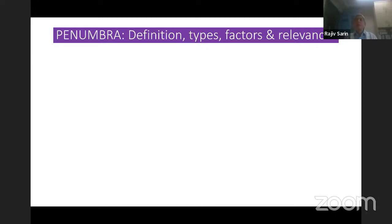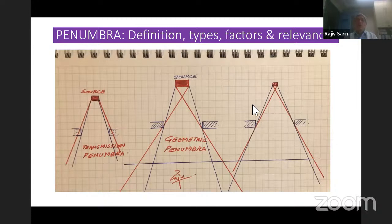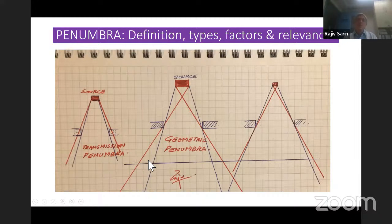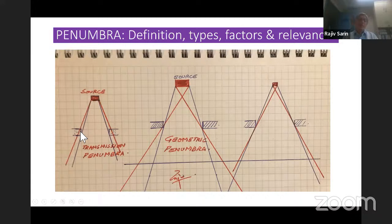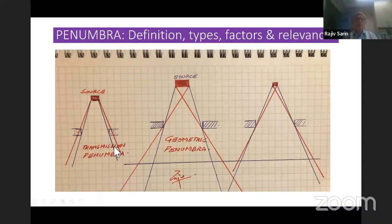Regarding penumbra, there are different types. First is geometric penumbra, which occurs because the source has a finite size — it is not a point source. The linac source is much smaller than the cobalt source (1.5 to 2 cm), so the penumbra of a linac is much less compared to cobalt. There is also transmission penumbra, especially with MLCs. Some MLC designs move in an arc fashion along with the divergence, so you would have less transmission penumbra. The MLC design details matter.